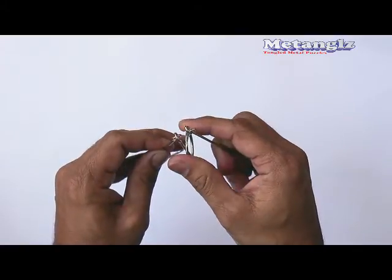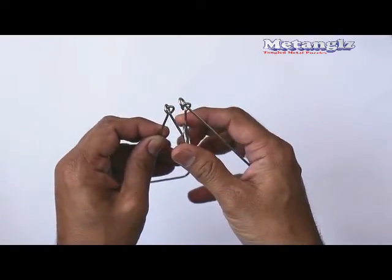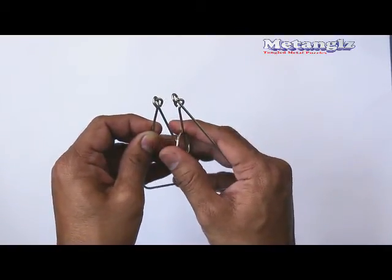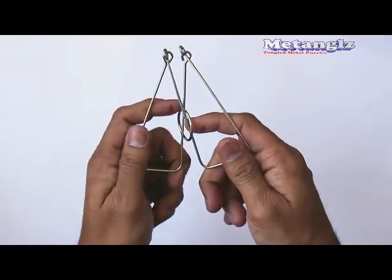Now gradually fold the two wings over each other while at the same time pushing the ring through the gap between the open ends created by the fold over.